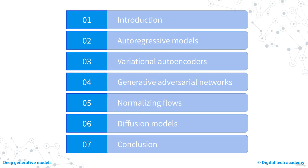You'll start by getting a solid foundation in the basics of generative AI and how it works. From there, we'll dive into the specifics of autoregressive models and variational autoencoders, with hands-on experience building and training your own models. Next, we'll cover generative adversarial networks, normalizing flows, and diffusion models — cutting-edge techniques used to create some of the most impressive image generation results to date — and you'll learn how to implement them in your own projects.